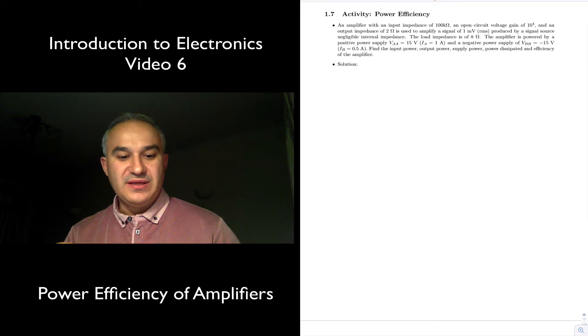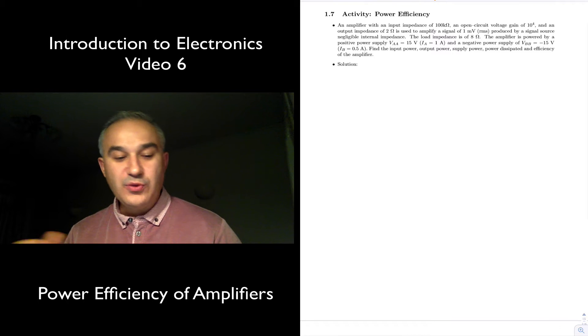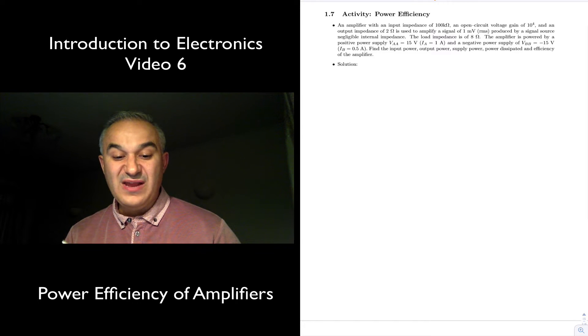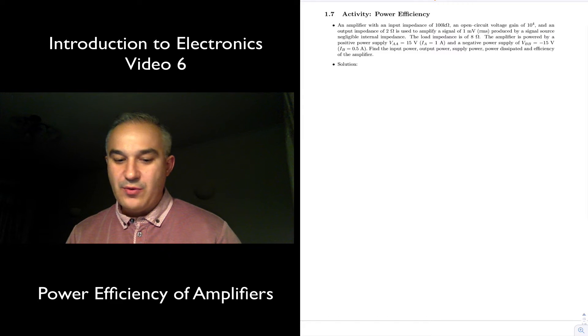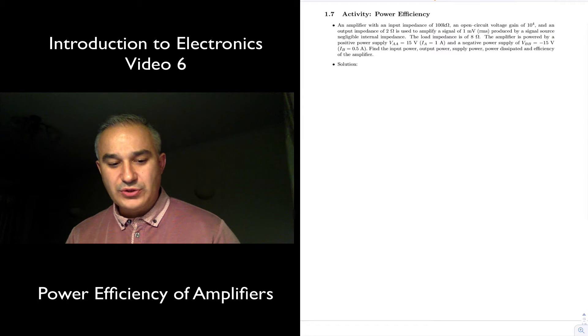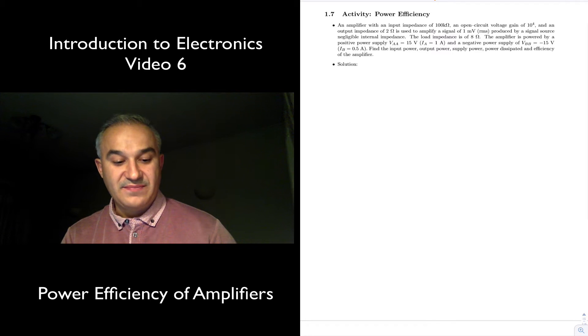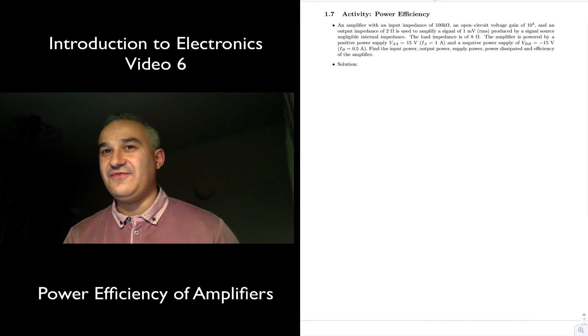An amplifier with an input impedance of 100 kilo ohms, an output circuit voltage gain of 10 to the 4, an output impedance of 2 ohms is used to amplify a signal of 1 millivolt produced by a signal source with negligible impedance. The load impedance is 8 ohms. The amplifier is powered by a positive power supply of 15 volts, the current of 1 amp, and a negative power supply of minus 15 volts, a current of 0.5 amps. And we are asked to find the input power, the output power, the supply power, the power dissipated, and the efficiency of the amplifier.